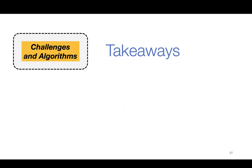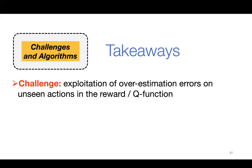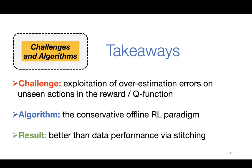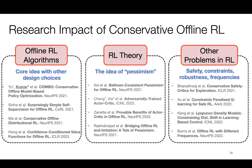That's the end of part one. The main challenge in offline RL is the exploitation of overestimation errors. The way to address this is the conservative paradigm — training conservative models for the reward function or Q function, or even a conservative dynamics model. Empirically, this method performs better because of stitching: you can leverage data and find better actions than any individual trajectory. This conservative principle has also been applied to safety, adaptation, and robustness problems beyond offline RL.